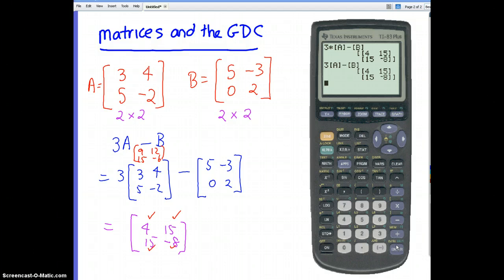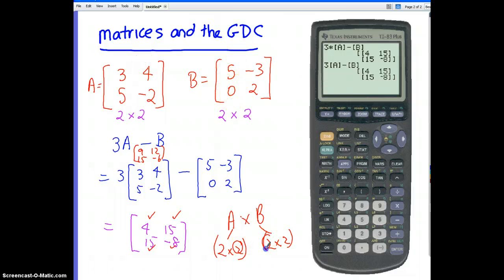Now could we do A times B? Can I do this? How do we know if we can do A times B? We have to look at our dimensions, don't we? We've got a 2 by 2 matrix here and a 2 by 2 matrix here. We need to know whether the number of columns in matrix 1 is the same as the number of rows in matrix 2. We've got 2 and 2, so since they're equal, we know we can multiply them.